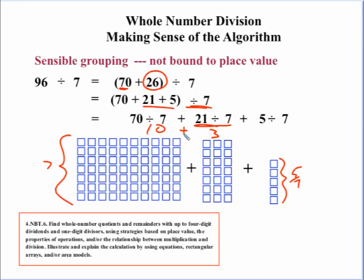But slightly differently where we, again, use grouping based on the divisibility of 7 rather than place value. So, again, we ended up with 10 plus 3, 13, and 5 sevenths as before.